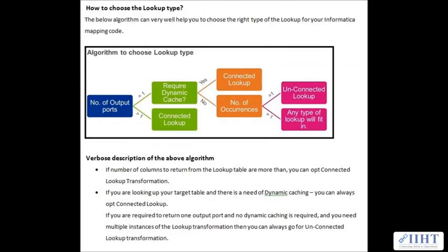Now, how to choose the lookup type? The following algorithm can help you choose the right type for your Informatica mapping. If the number of columns to return from the lookup table are more than one, opt for connected lookup. If it's equal to one, consider dynamic caching — if you're looking up your target table and need dynamic caching, go with connected lookup. If you require only one output port, no dynamic caching is needed, and you need multiple instances, then go for unconnected lookup.